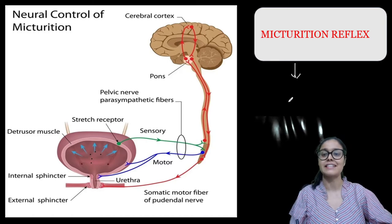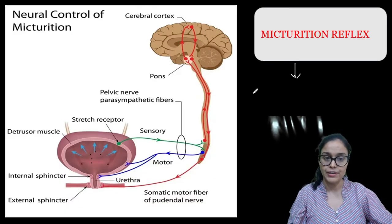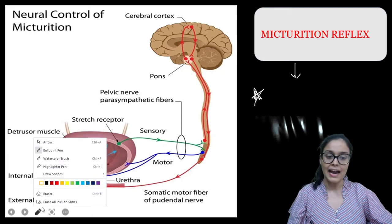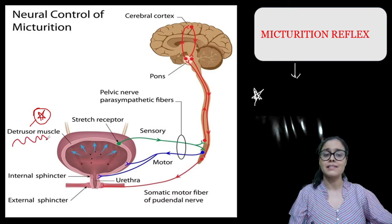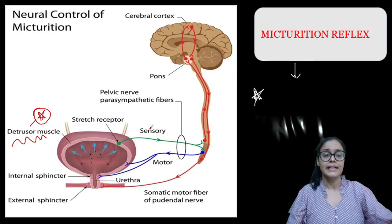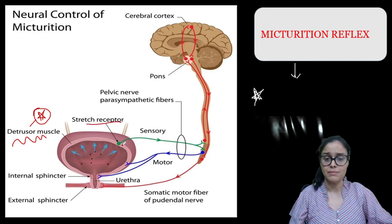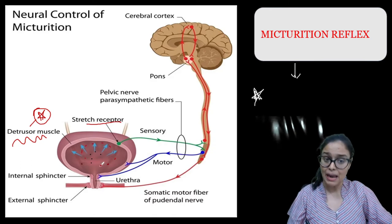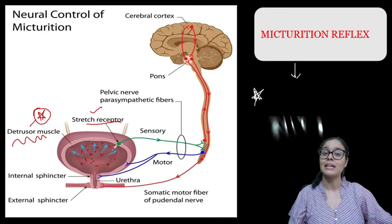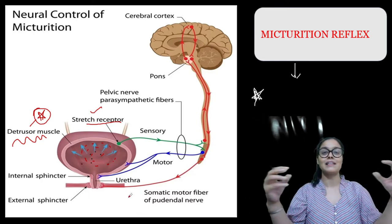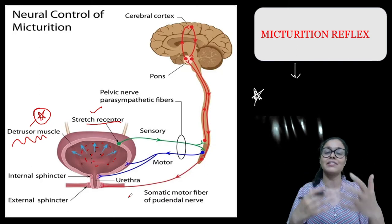Micturition reflex is controlled by the nervous system — it is neural control, not hormonal; only neural control. In our urinary bladder we have the detrusor muscle, which will push the urine outside the body and release it. There is a stretch receptor present in the detrusor muscle. Whenever the urinary bladder is filled with urine, it will be received by the stretch receptor of the urinary bladder, which takes the signal to the brain, and the brain sends the signal to the urethral muscle to contract, giving us the urge of urination.